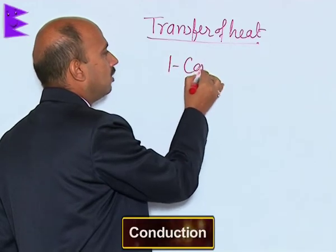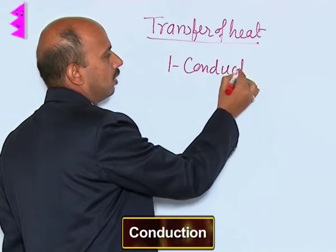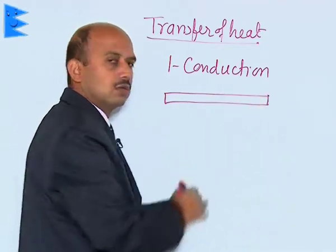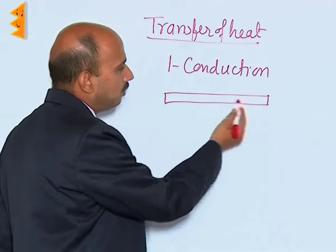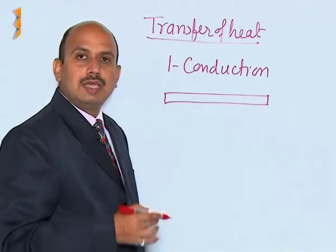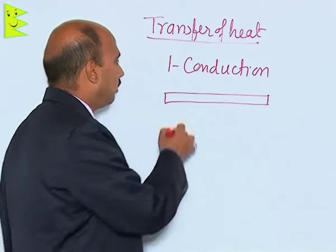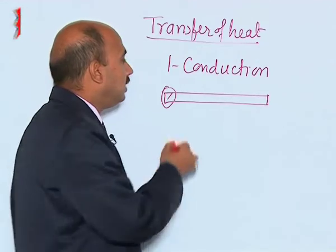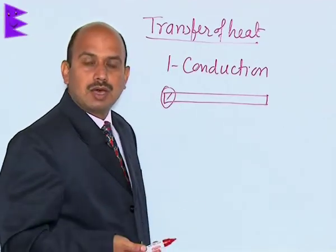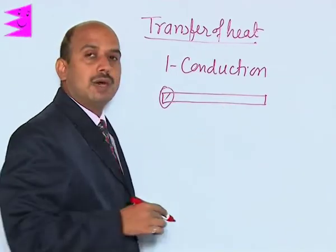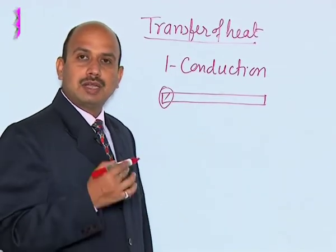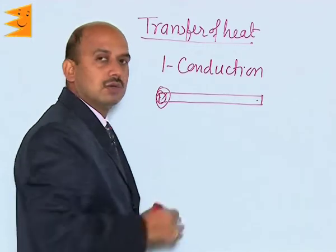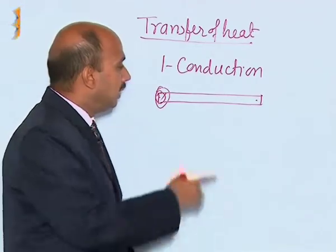The first one is called conduction. In conduction, suppose you have taken a metal rod. This metal rod is made of a large number of atoms which keep vibrating at room temperature. When you heat one end, each atom starts vibrating with greater amplitude and transfers its energy to the next atom, and by this way the next atom vibrates and transfers its energy further. Energy is transferred from one end to another without transferring the material of the rod.